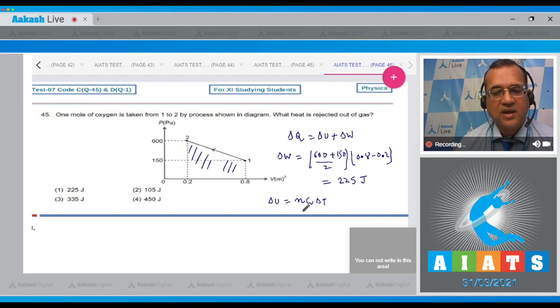ΔU is equal to nCᵥΔT, but Cᵥ is not given. It is given that oxygen, and oxygen is diatomic. For diatomic, we take Cᵥ as R divided by gamma minus 1, and gamma is 7/5 minus 1 into ΔT.